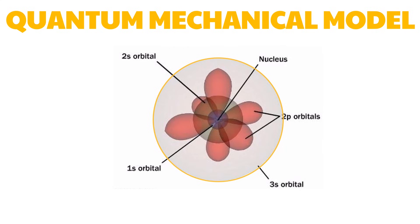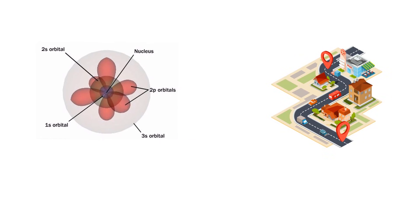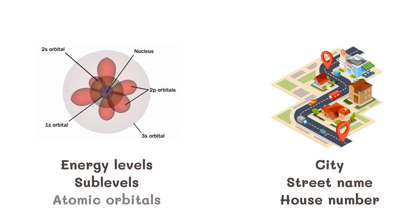Each energy level contains a certain number of sublevels. Every sublevel has a fixed number of atomic orbitals. An atomic orbital is the region around the nucleus where the electron is most likely to be found. The atomic orbital serves as the house of the electron and it can accommodate a maximum of two electrons. Tracking down the location of a given electron in an atom is similar to tracking where a person lives — you need to know a complete home address including the city, street name, and house number, which correspond to energy levels, sublevels, and atomic orbitals in an atom.